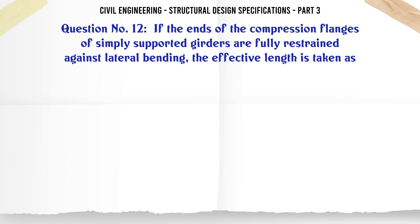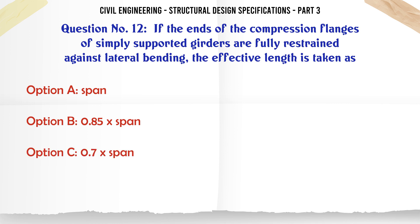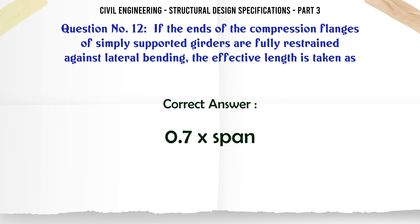If the ends of the compression flanges of simply supported girders are fully restrained against lateral bending, the effective length is taken as: a. Span, b. 0.85 × span, c. 0.7 × span, d. 0.5 × span. The correct answer is: 0.7 × span.